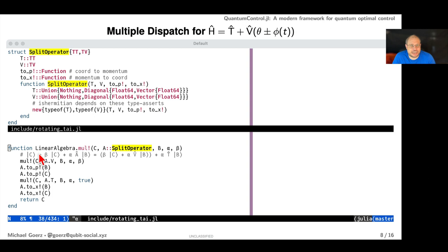Then we redefine the basic linear algebra operations specifically for that data type. You have the matrix vector multiplication here: you apply the potential operator, transform to momentum space, apply the kinetic operator, and go back to coordinate space. For this component V, you would define a custom data type that encodes specifically this offset control and then define another multiplication function that would evaluate this line.